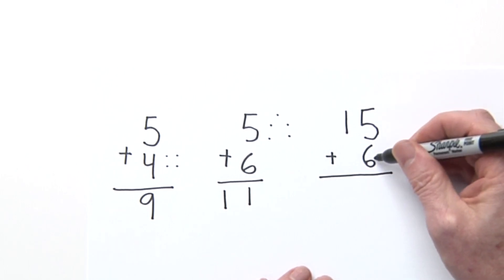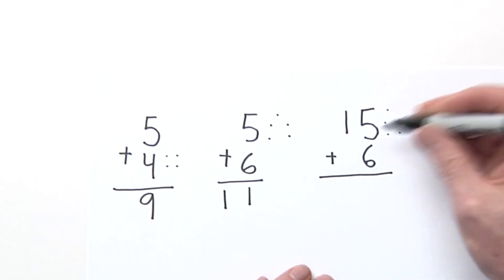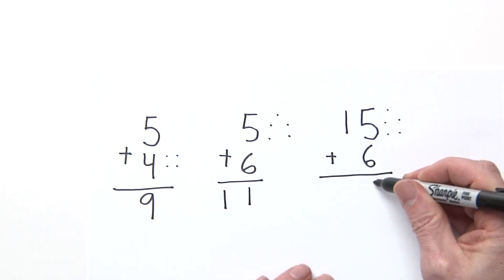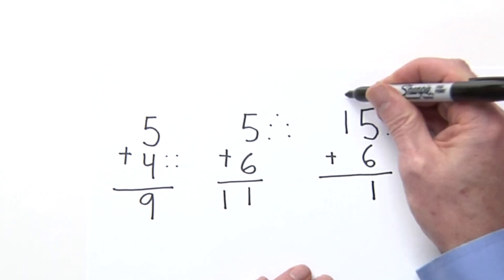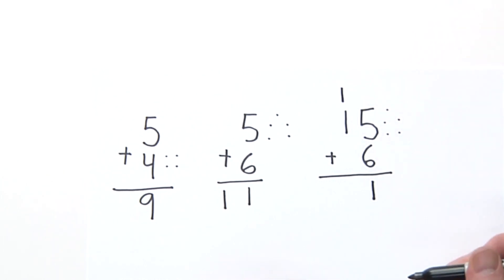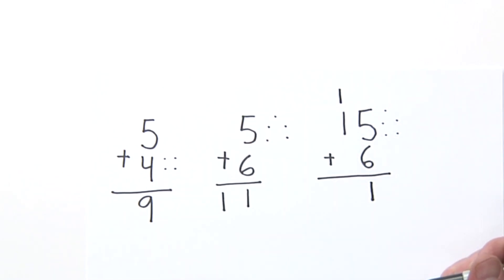So remember, 6 plus 5 is 6, 7, 8, 9, 10, 11. And instead of me putting the 11 right here, I'm going to put the 11 written like this. You have to carry it over into the tens because the 10 is in the tens place.